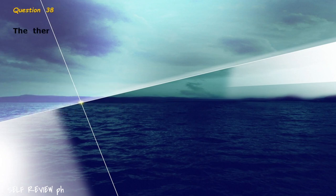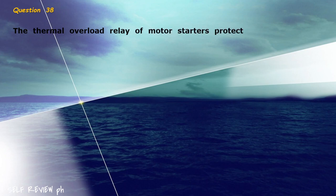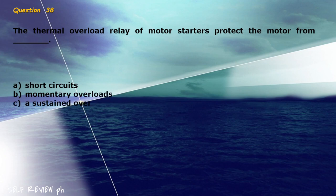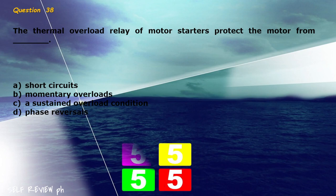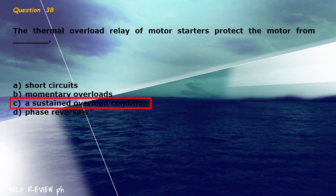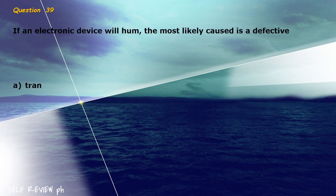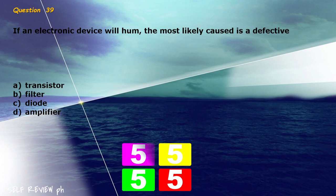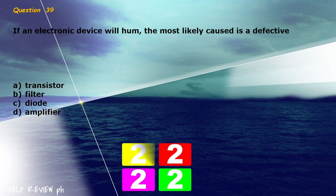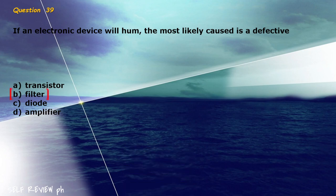Question 38: The thermal overload relay of motor starters protect the motor from blank. A) short circuits, B) momentary overloads, C) a sustained overload condition, D) phase reversals. The correct answer is letter C, a sustained overload condition. Question 39: If an electronic device will hum, the most likely cause is a defective blank. A) transistor, B) filter, C) diode, D) amplifier. The correct answer is letter B, filter.